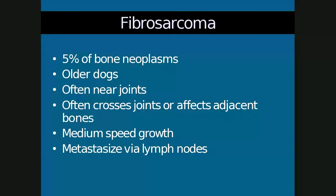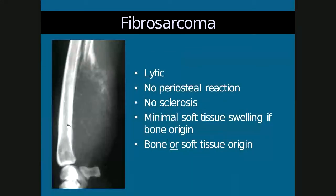Fibrosarcoma is the last aggressive lesion discussed and comprises only about 5% of neoplasms. It also affects older dogs and is often near joints. Unlike the other two tumors, fibrosarcoma can cross joints or affect adjacent bones. It has medium growth speed and metastasizes via the lymph nodes rather than the lungs. A typical fibrosarcoma presents as a very large lytic area with complete bone destruction, no periosteal reaction, remnant cortex visible, no sclerosis, and minimal soft tissue swelling if it originates from bone, or extensive soft tissue swelling if from soft tissue origin.